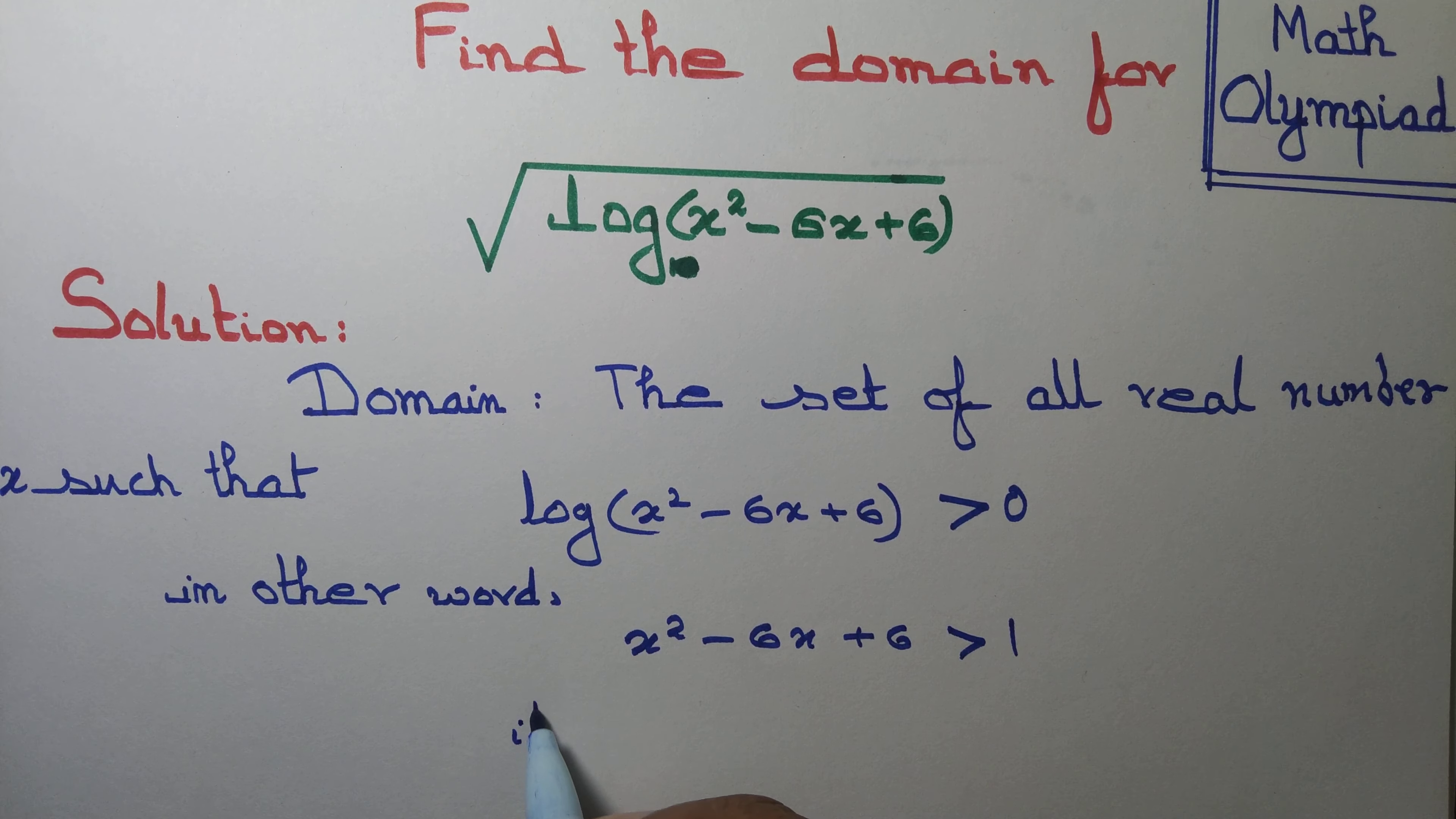Now you see you can factorize x squared minus 6x plus 5 because this can be written as x squared minus 5x minus x plus 5. And we take x common and you are left out with x minus 5. And here we can take minus 1 common again left out with x minus 5.